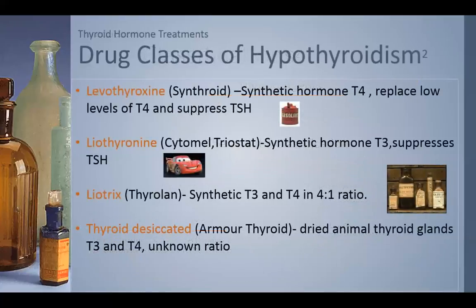Here are our thyroid hormone treatments. Levothyroxine is a synthetic form of T4 — the potential energy — and is the first drug given when we see signs of hypothyroidism, because we want the body to try to convert T4 into the active form T3 used for energy. But when that's not possible, lyothyronine is given, because the body can't produce T3 on its own.